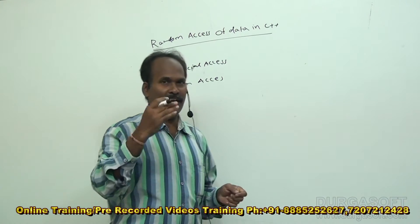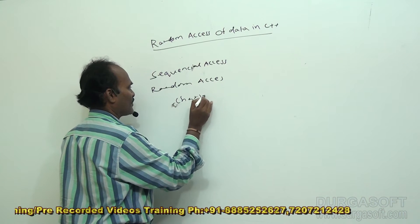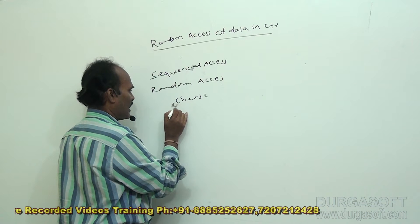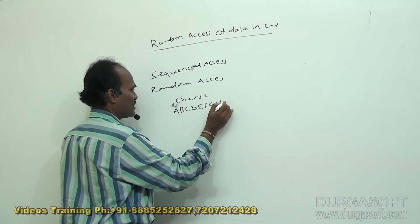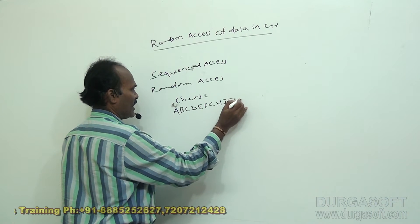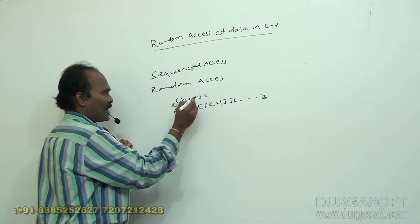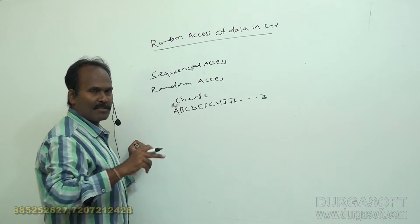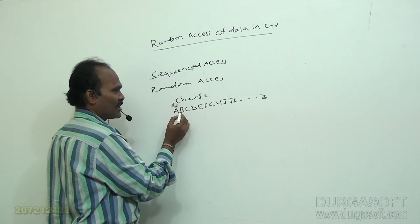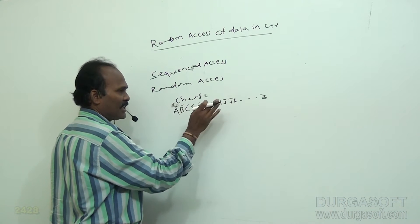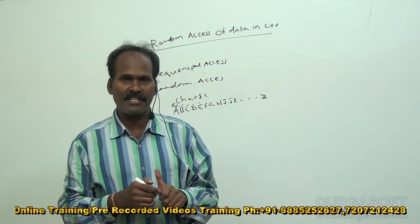Sequential access means while reading a file, suppose in a file called CARS I have some data like A, B, C, D, E, F, G, H, I, J, K, and so on up to Z. When you want to read the data from this file, the file pointer reads all the characters one by one — first A, then B, C, D, E — like that reading all characters one by one. This fashion is called sequential access.